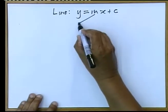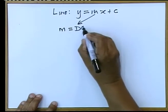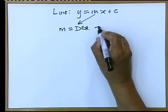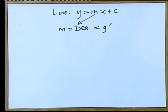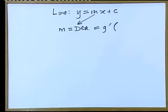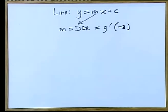The gradient, very important, is equal to the derivative, which in this case is equal to G dash, but you are asked to go and work out that line, the tangent, of which the gradient needs to be found at X equal to negative 3.